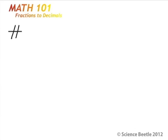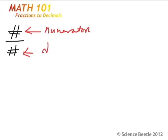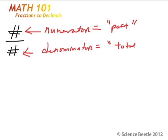Remember from the last lesson, we talked about fractions being some number over another number. We also learned that the top number was called the numerator, and the bottom number was called the denominator. Another shortcut I showed you was that the numerator could be considered the part we're interested in, and the denominator is the total number of parts.